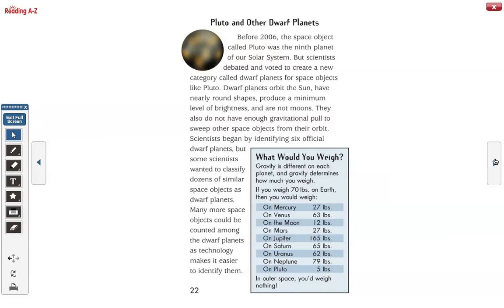Scientists began by identifying six official dwarf planets, but some scientists wanted to classify dozens of smaller space objects as dwarf planets. Many more space objects could be counted among the dwarf planets as technology makes it easier to identify them.